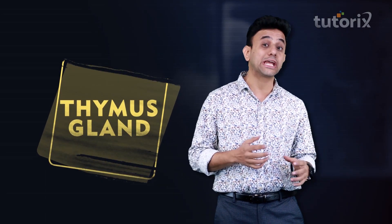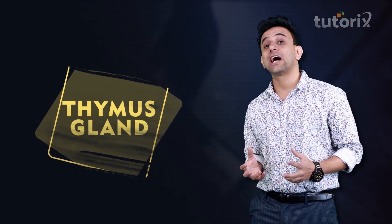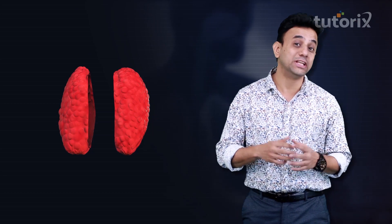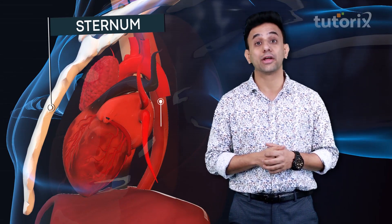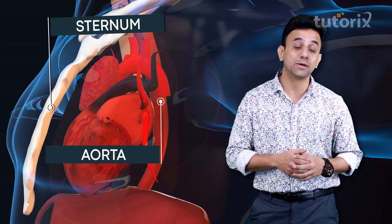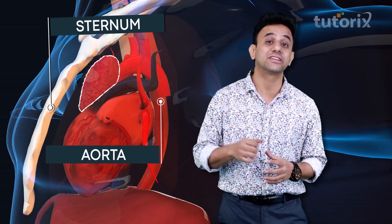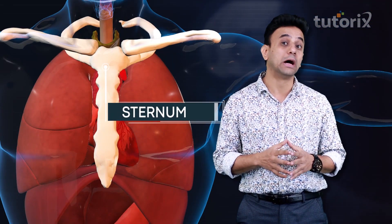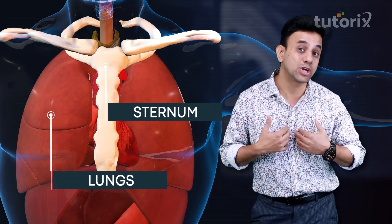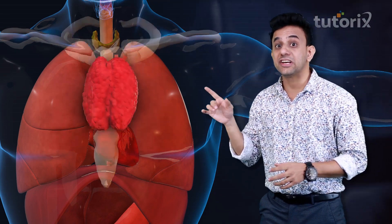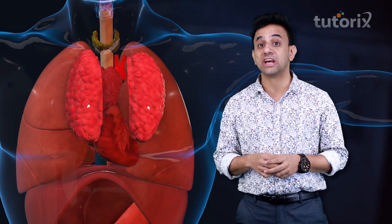In this session we are going to talk about the thymus gland. The thymus gland is a bilobed structure — it has two lobes — located in the mediastinum between the sternum and the aorta. In simple terms, the thymus gland is located behind the sternum and between the two lungs, in the anterior part of the chest. This pinkish organ has two lobes.